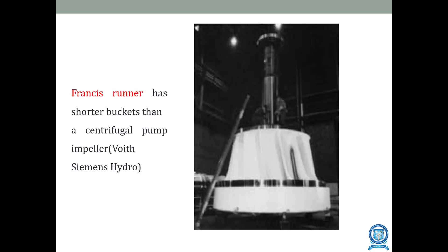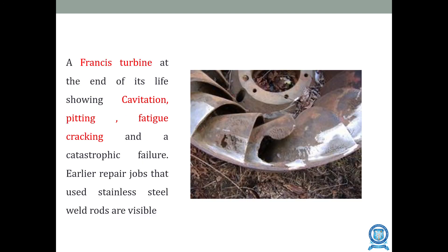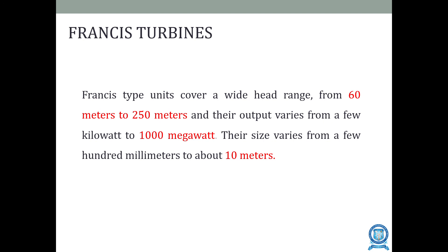The Francis turbine has short buckets compared with centrifugal pumps. A Francis turbine at the end of its life can show cavitation pitting, fatigue cracking, and catastrophic failure; earlier repair jobs using stainless steel weld rods are also visible. The diagram shows distortion due to cavitation pitting and fatigue cracking. The Francis turbine can handle heads from 60 to 250 meters, output ranging from a few kilowatts to 1000 megawatts, and runner sizes from a few hundred millimeters to about 10 meters.